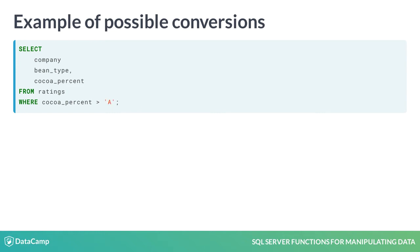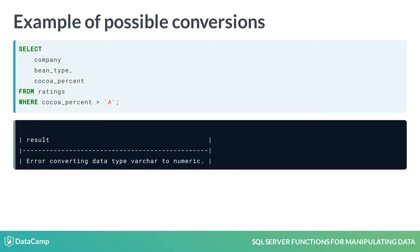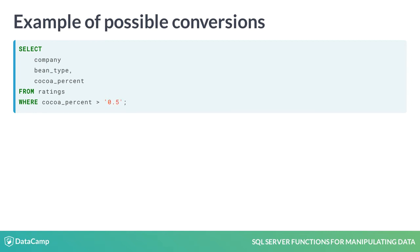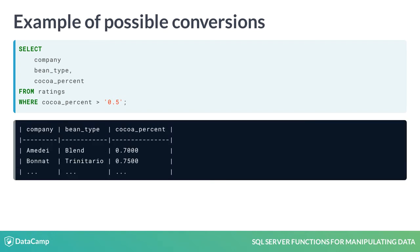This query, however, will generate an error because the server cannot understand what we want to achieve by comparing the letter A to a decimal column. Last but not least, let's do the comparison with the character 0.5. Surprisingly, this query will work. The difference is that the character 0.5 can be interpreted by SQL Server as a number and is implicitly converted.